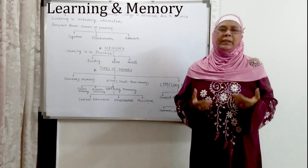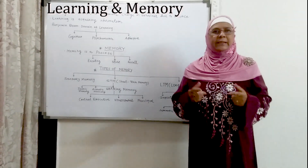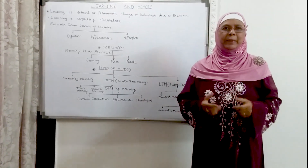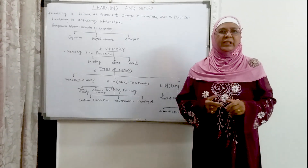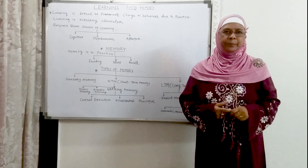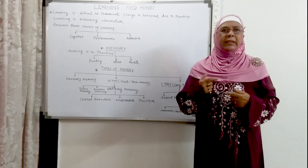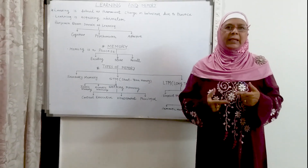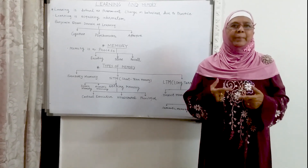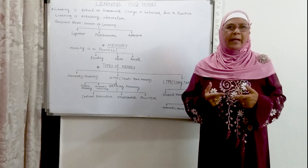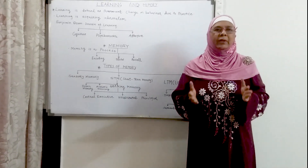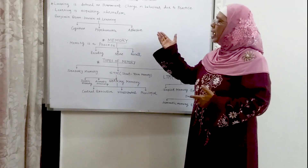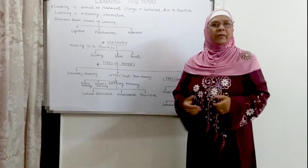What is learning? Learning is defined as a permanent change in human behavior. How does this change come? Due to practice. Whatever activity we are doing, we are doing it again and again. Then that becomes a practice. And when we do the practice, our learning takes place. Learning is also acquiring information.